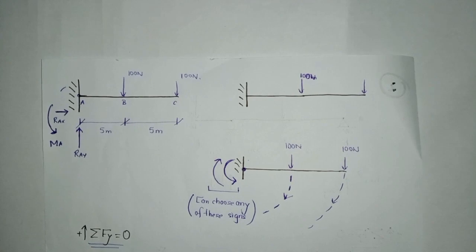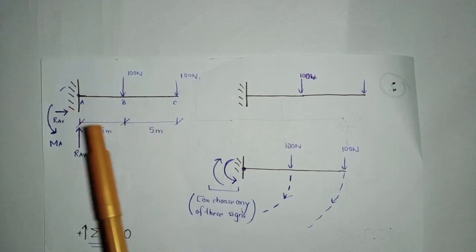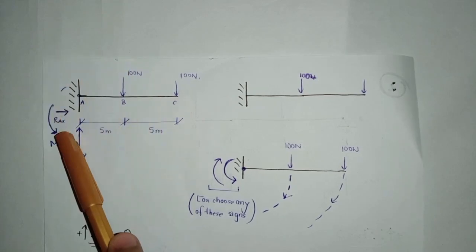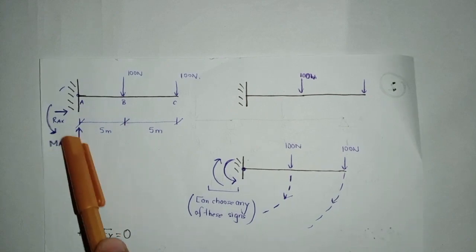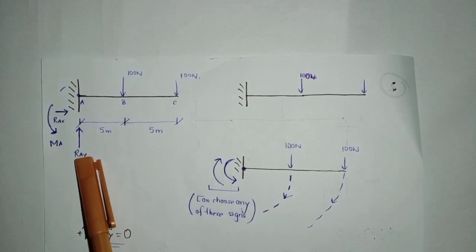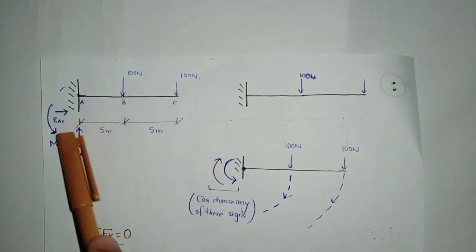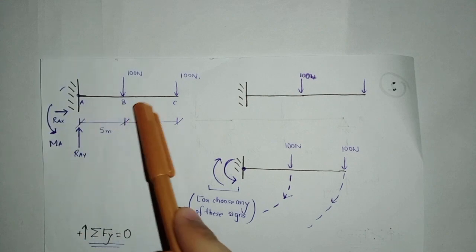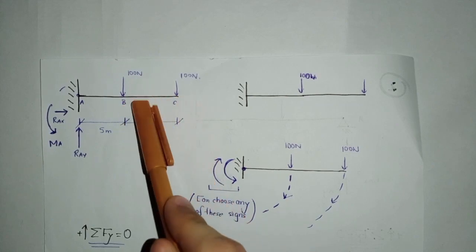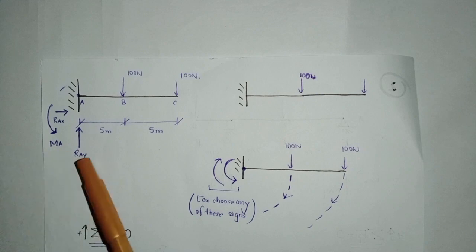Let's get to the second question. In this beam, two external loads are applied at distances of 5 meters and 10 meters respectively from the fixed support, and both have a magnitude of 100 N. A fixed support resists forces in the vertical and horizontal directions, and also resists moments. The vertical reaction RAY is acting upward, as both external forces act downward. RAX equals zero as there are no external horizontal forces. Both forces produce a clockwise moment, so the direction of MA should be anticlockwise.